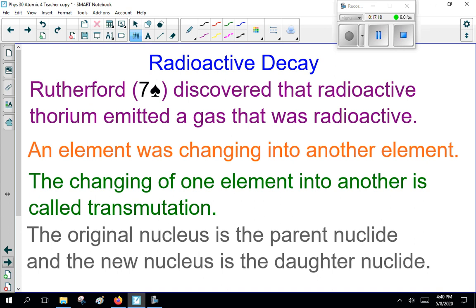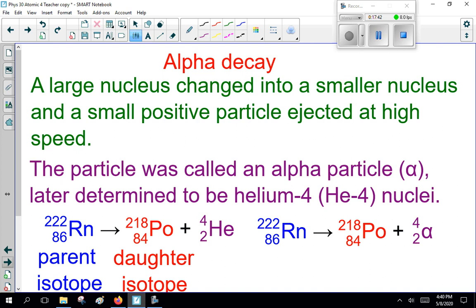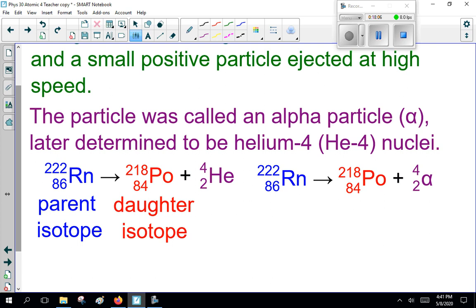Now, I will come back to this graph in a few minutes, but first, I want to talk about radioactive decay. Now, Rutherford, seven of spades, discovered that radioactive thorium emitted a gas that was radioactive. And the element was changing into another element. Now, the changing of one element to another element is called transmutation. Now, the original nucleus is called the parent nuclei, and the new nucleus is called the daughter nuclei. Now, types of radioactive decay. The first is alpha decay. A large nucleus changed into a small nucleus, and a small positive particle ejected at high speed. So, the particle was called an alpha particle. Given the Greek letter alpha, it was later determined to be helium-4.